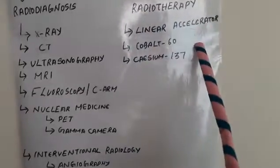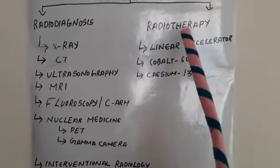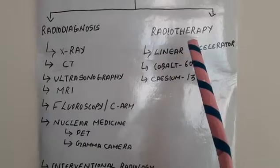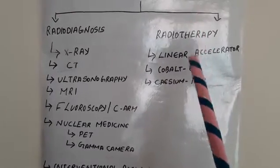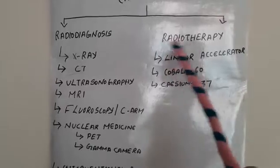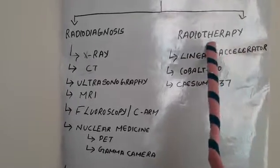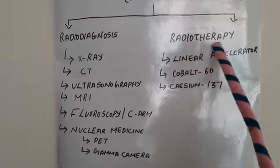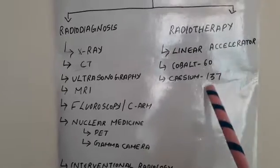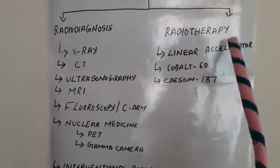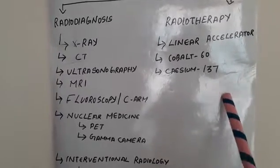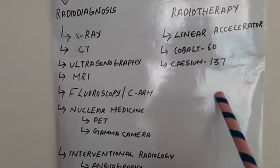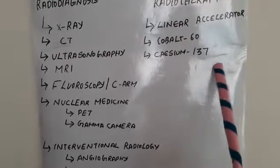Radiotherapy is the department associated with cancer treatment. The different cancer treatment procedures are surgery, chemotherapy, and radiotherapy. The main machines associated with radiotherapy are the linear accelerator, cobalt-60, and cesium-137, and the goal is to kill or destroy tumor cells and malignant tissues using radiation.